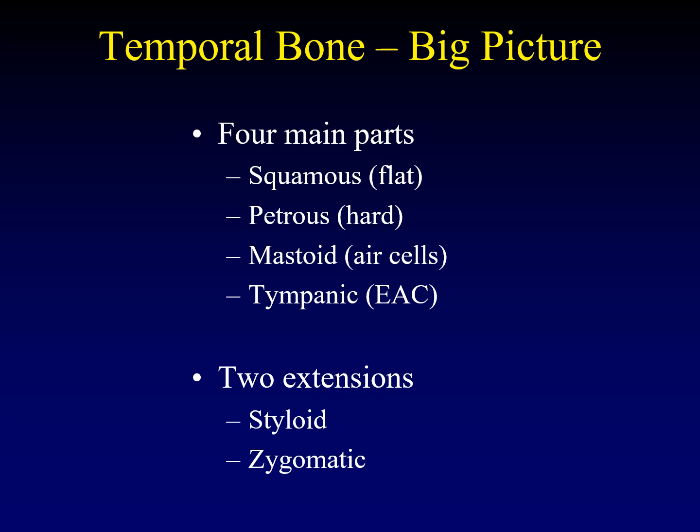The temporal bone has four main parts: the squamous part (squamous means flat), the petrous part (meaning hard), the mastoid part which houses the lateral air cells, and the tympanic portion which is pretty much the bones of the external auditory canal. There are also two extensions: the styloid process and the zygomatic process that forms the posterior half of the zygomatic arch.